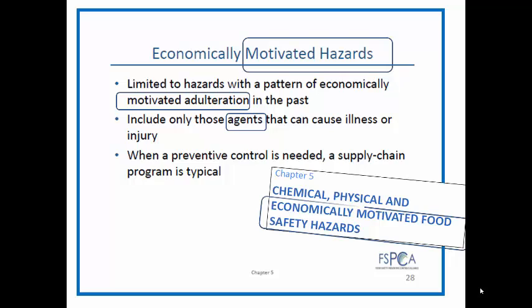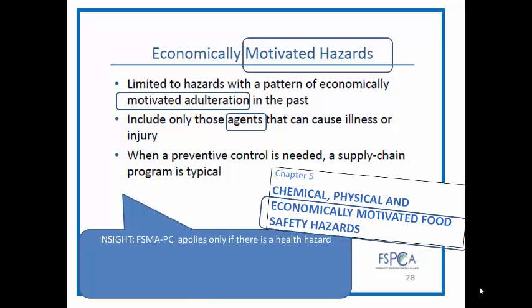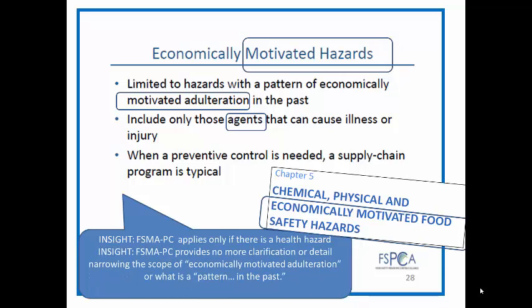Looking back at the title — economically motivated food safety hazards — this is another new term. The key is that all these different terms point to a broad scope of food safety hazards: any type of hazard where the original act is economically motivated. FSMA-PC applies only if there's a health hazard. FSMA-PC provides no further clarification narrowing the scope of EMA or what constitutes a pattern in the past — meaning it's a very broad definition covering all types of economically motivated acts or food fraud. The supply chain program focus is really looking at prerequisite programs for the entire supply chain, not just specific suppliers.